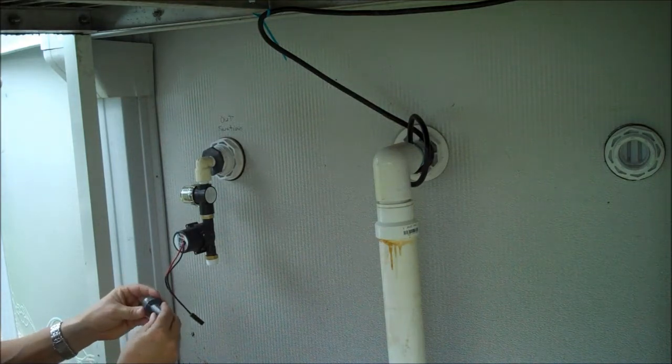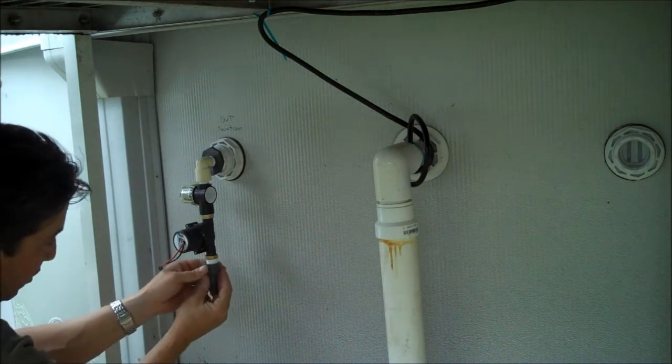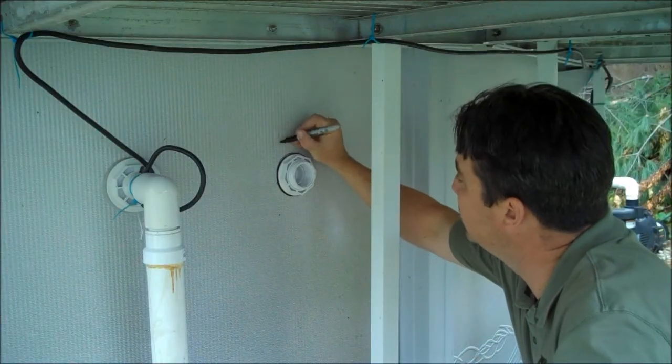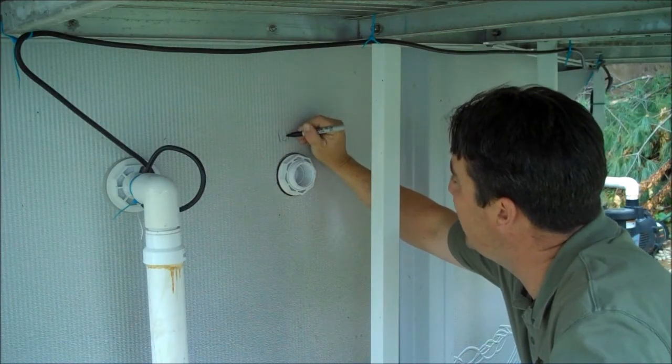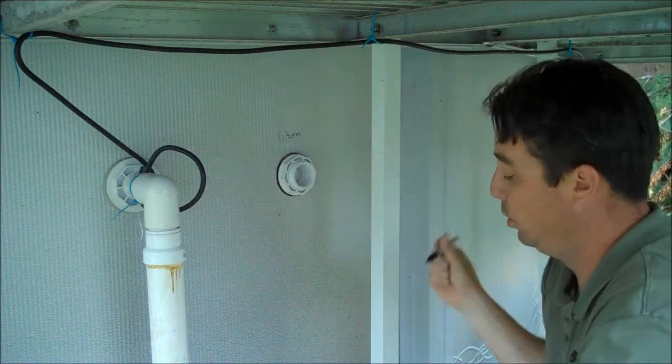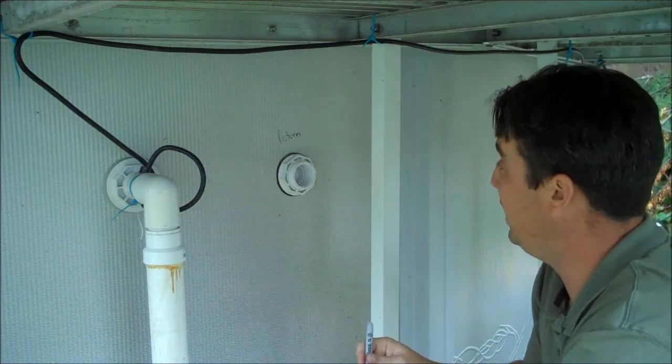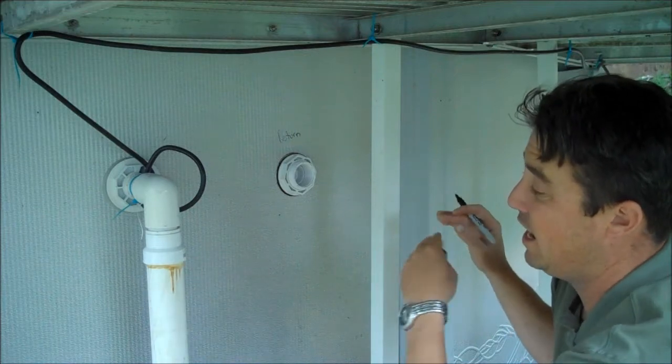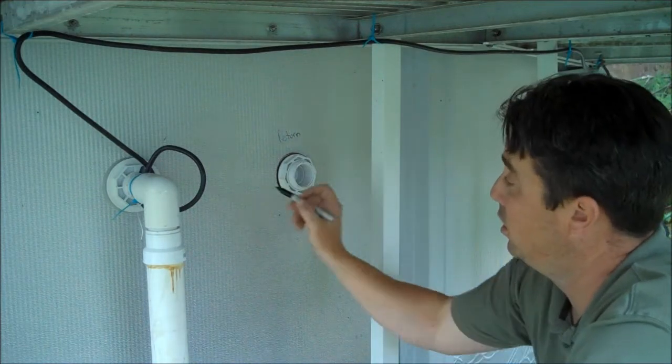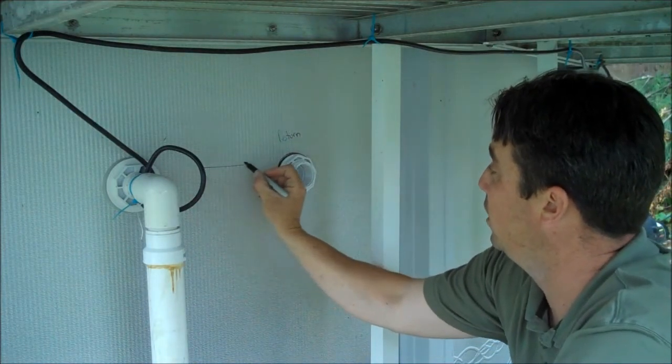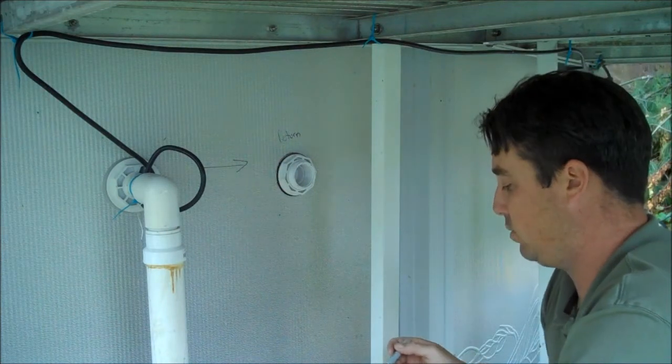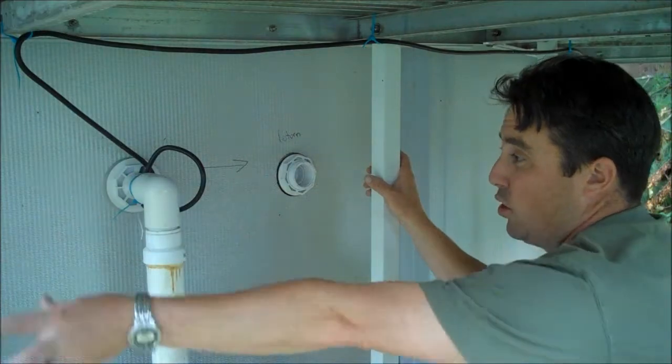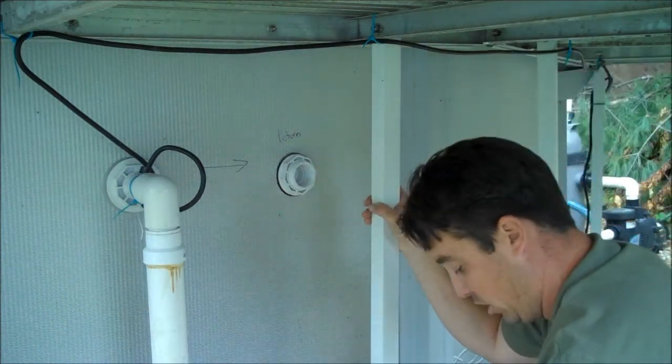Last is a half inch female NPT by hose barb. This is the return side. This is where the hot water will go back into the pool. We want to make sure that the return side is on the away side of the flow of the pool. This pool is flowing counterclockwise. So we want to make sure that we pull the coldest water from that side and return it to this side.